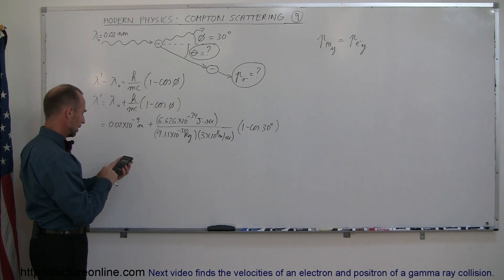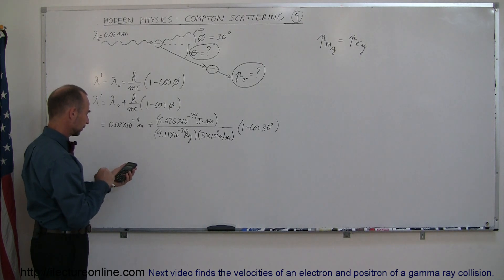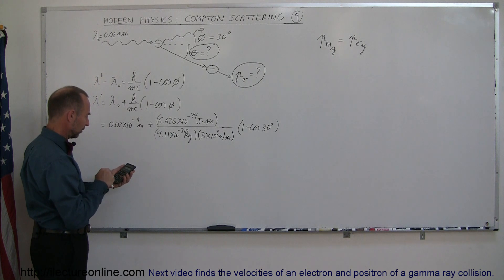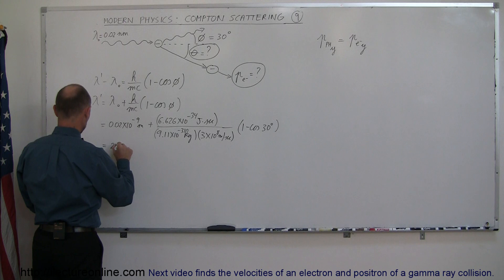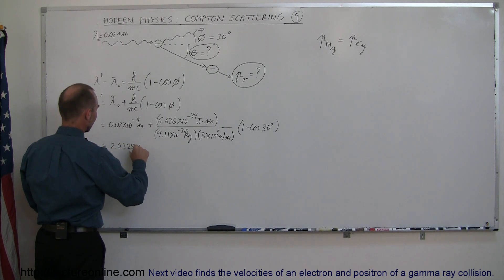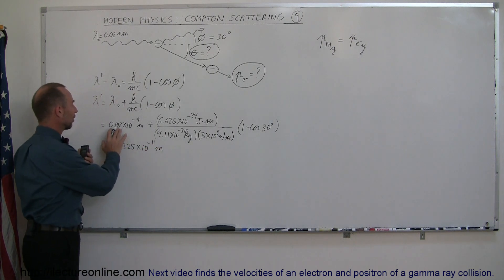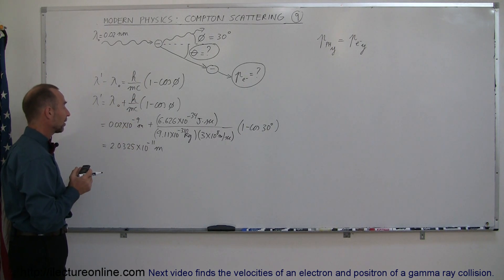So: 6.626e-34 divided by 9.11e-31 divided by 3e8, multiplied times 1 minus the cosine of 30, equals — and then add that to 0.02e-9 — and so this now becomes 2.0325 times 10 to the minus 11 meters. So that's the new wavelength. Notice that this would be 2 times 10 to the minus 11, so it's a little bit bigger than it was before the photon got scattered off.